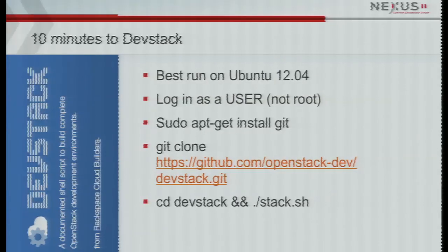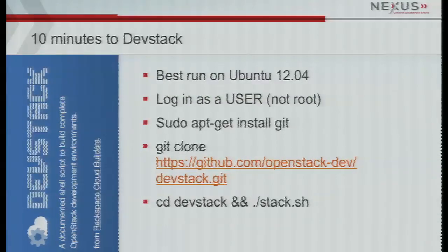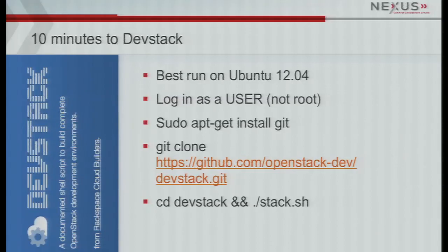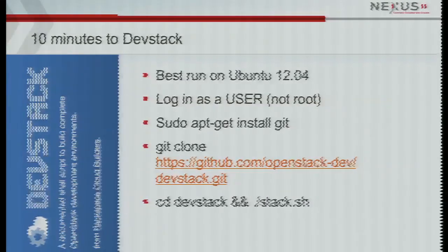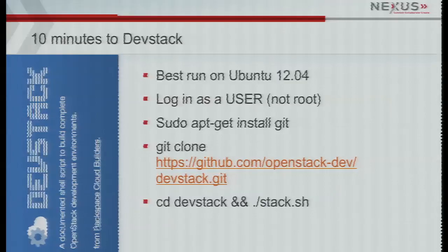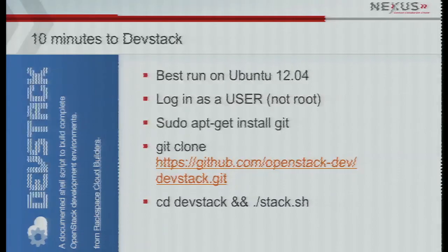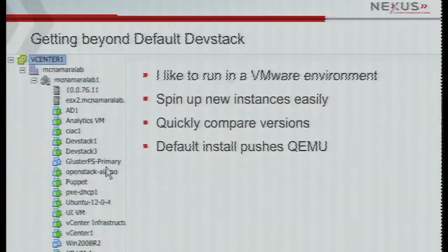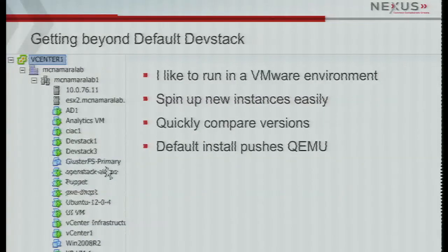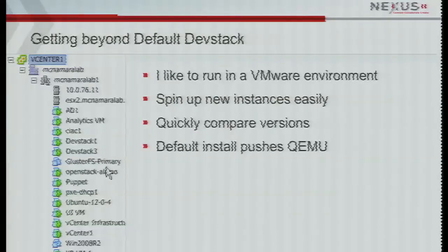DevStack is a development tool for OpenStack - it is not a fully working production version. You can create instances on it, but it's made for development. On Ubuntu, you git clone it in, then cd into DevStack and run stack. I like to run it inside of VMware infrastructure. It's really easy to spin up another instance - I have my puppet servers in there, Ubuntu 12.04 templates, checkpoints if I'm making a change, and I can run multiple DevStack instances side by side.